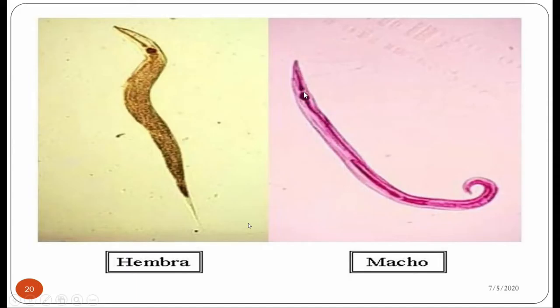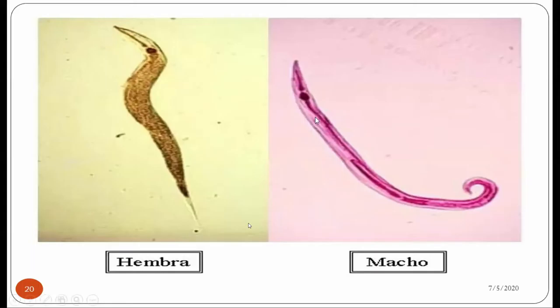On the left side is a larger structure — it is thicker than the male worm. This is the adult female worm of Enterobius vermicularis. This is the anterior portion where there is the oral region; this is the oesophagus which ends into the double bulb-like structure — this is the first bulb and this is the second bulb. The posterior region is sharply pointed, which is why the adult worm of Enterobius vermicularis is called pinworm.